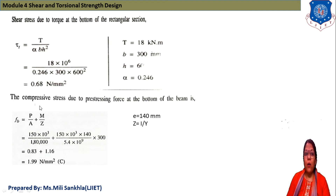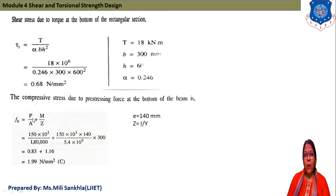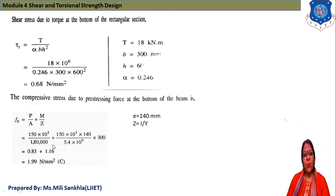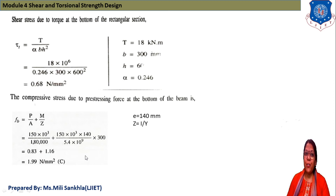Compressive stress due to prestressing force at the bottom of the beam: FB = P/A + M/Z (direct stress plus bending stress). Eccentricity e = 140 mm and Z = I/Y. Substituting the values, the bottom fiber stress is 1.99 N/mm² (compressive).